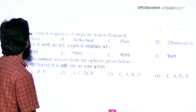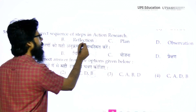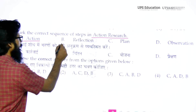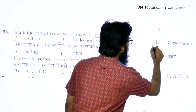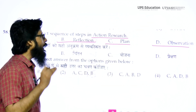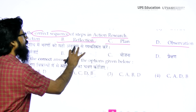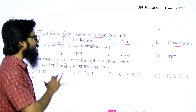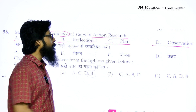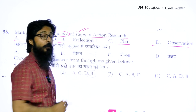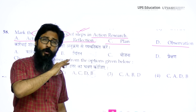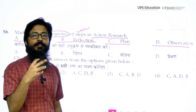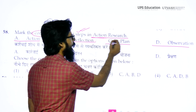The question is: mark the correct sequence of steps in action research. We are having these four options — A: Action, B: Reflection, C: Plan, and D: Observation. We have to arrange them in the correct sequence according to the steps of action research.